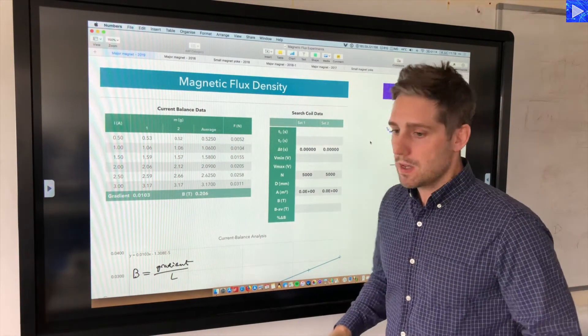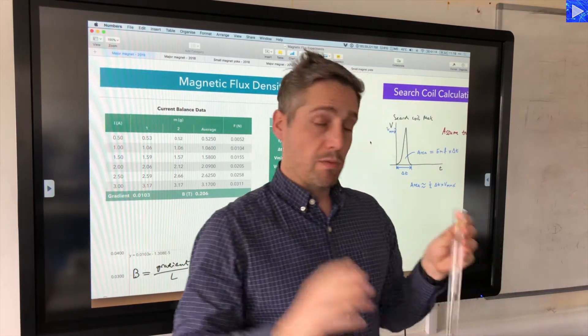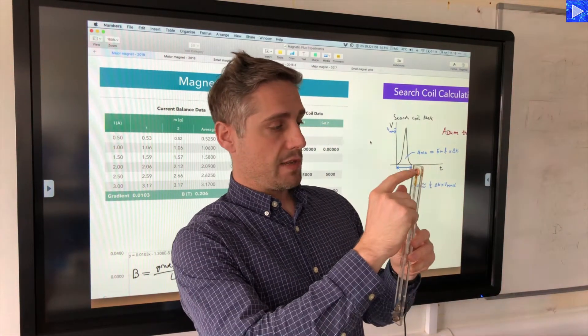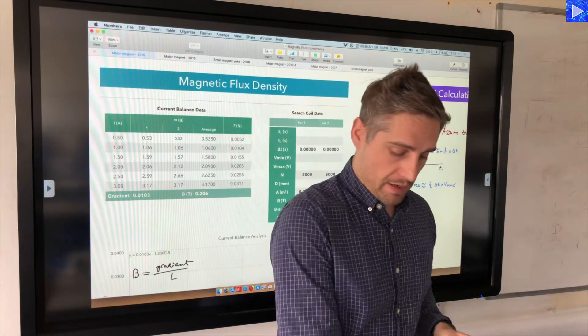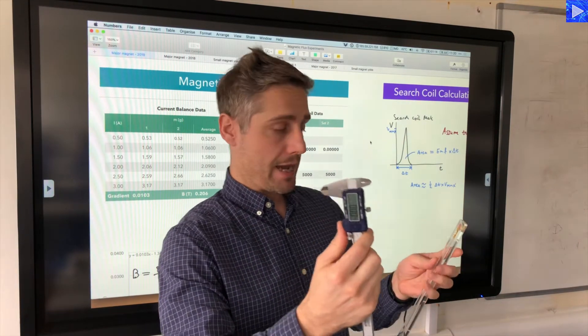If you remember, this was our search coil. I placed it in the field and pulled it out. There was one final measurement I needed to take for my search coil, which was the diameter of the coil so I could work out the cross-sectional area. I've got my digital vernier caliper back.